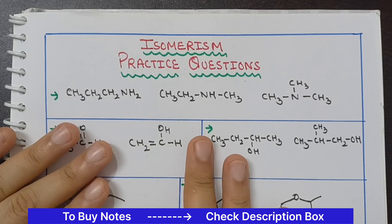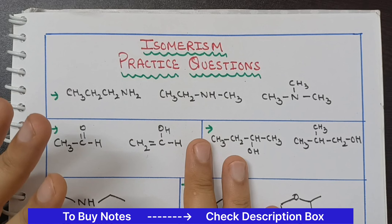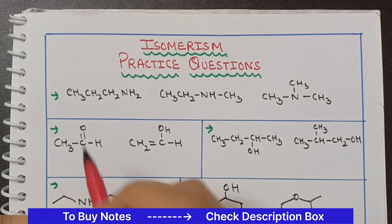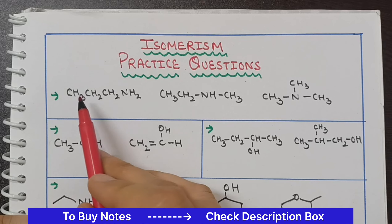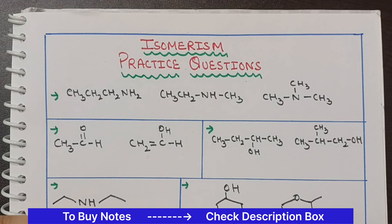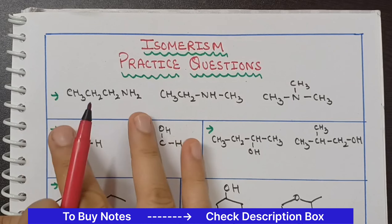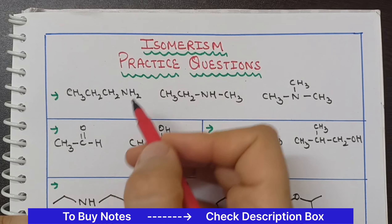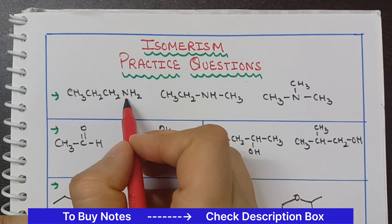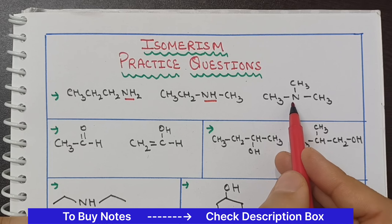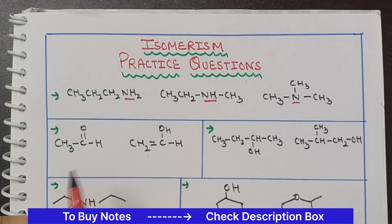These questions are mixed with 5 types of isomerism. So in the first question, there are 3 compounds given and you have to comment on which isomerism is shown. Here is NH2, here is NH2, and here is only nitrogen.